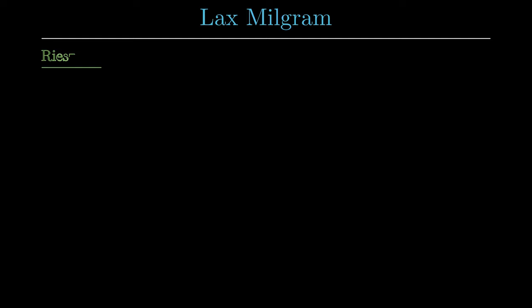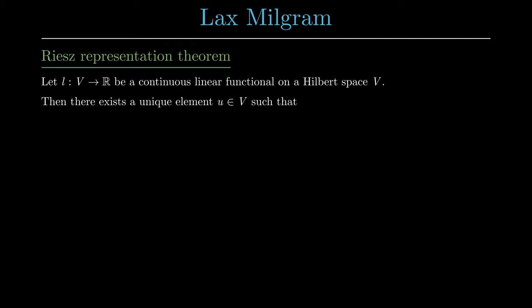For simple variational formulations, we can already get a unique solution by the Riesz representation theorem. This theorem states that for any continuous linear functional l which acts on the Hilbert space V, there is exactly one u in V such that the scalar product of u and φ equals the value of l at φ for each element φ of the Hilbert space V. Moreover, this operation is an isometry which means that the norm of l and the norm of u are the same.